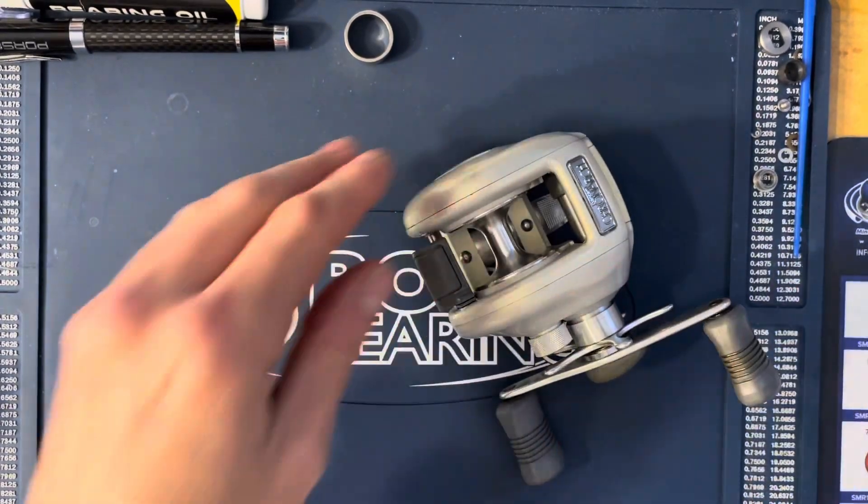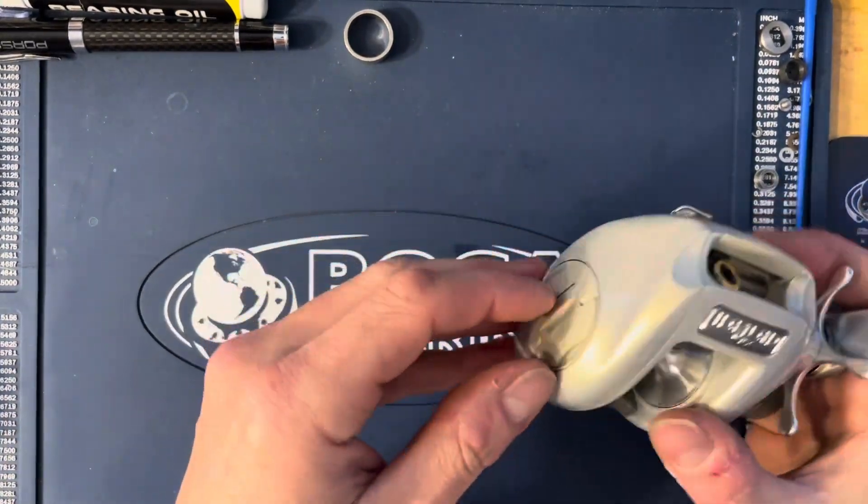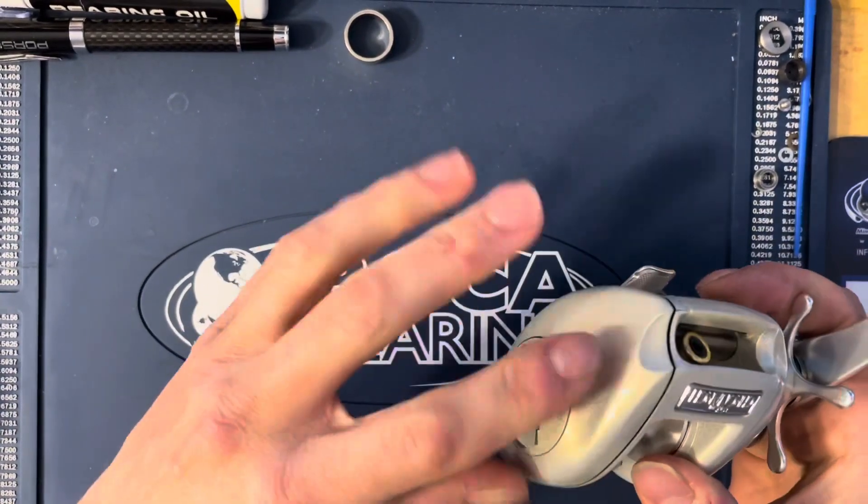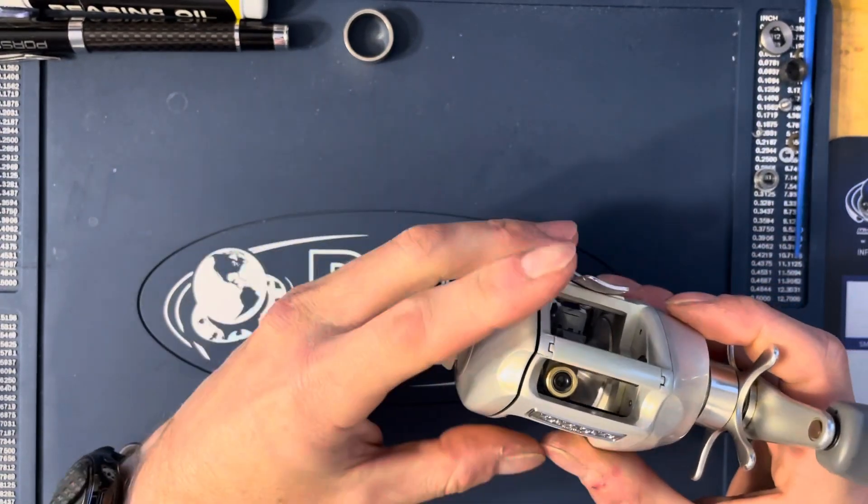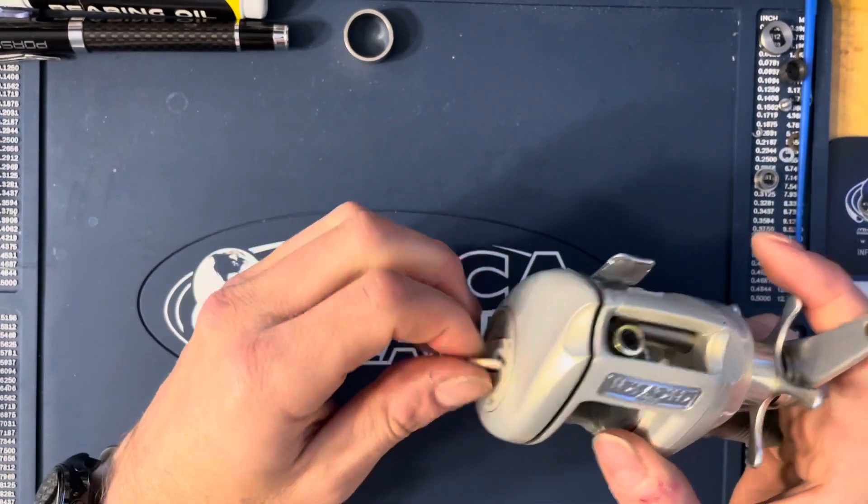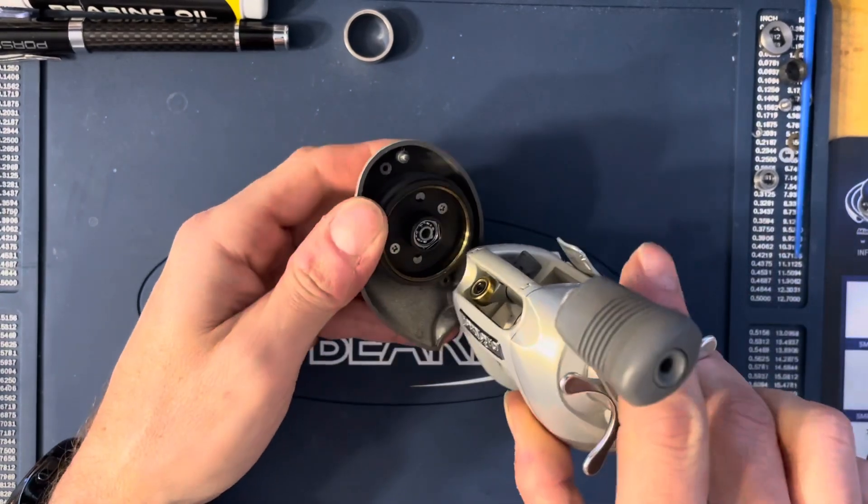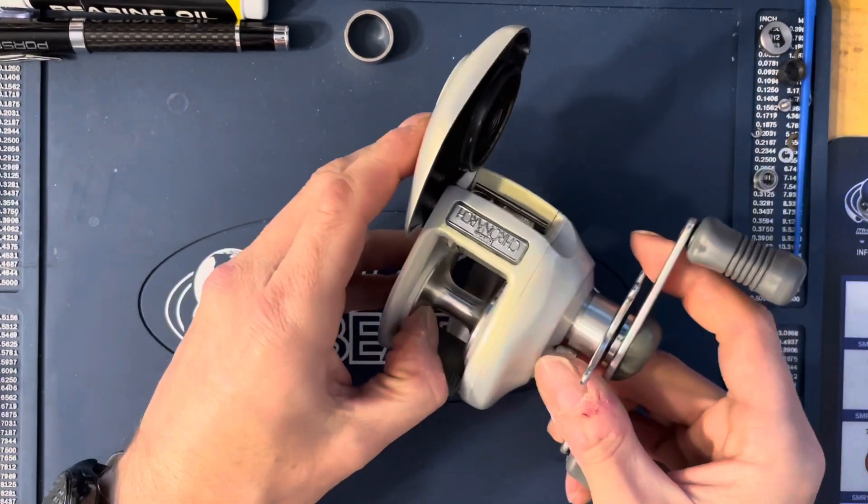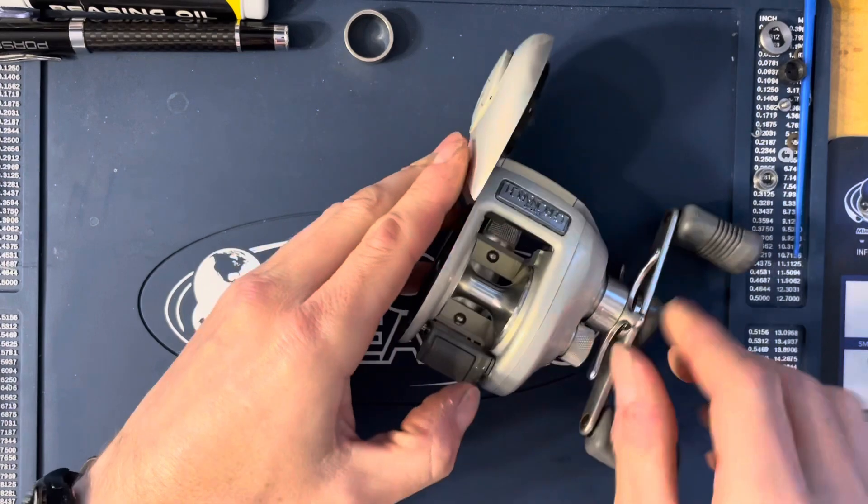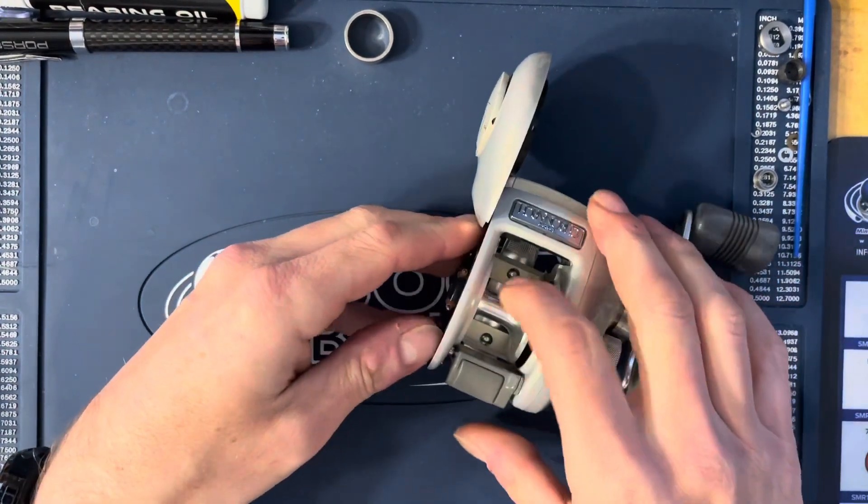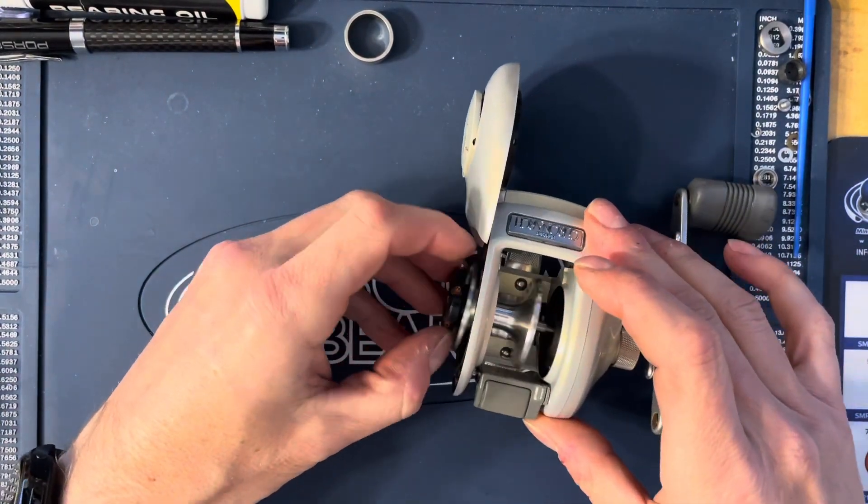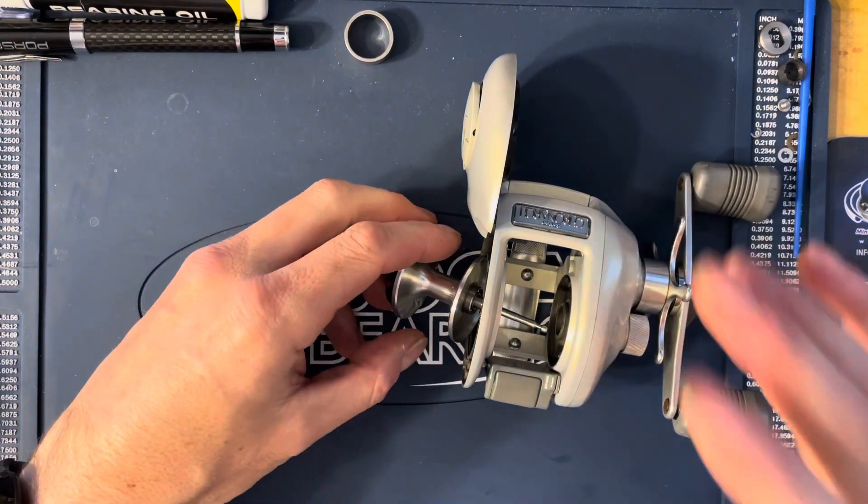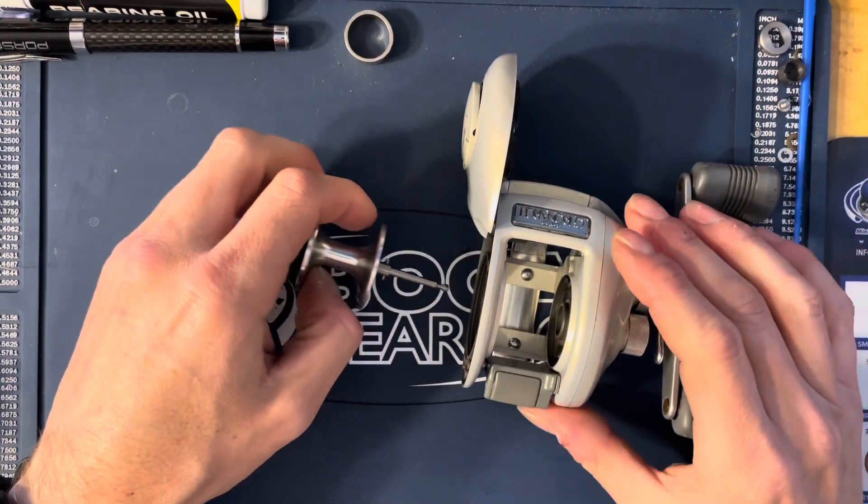It is one of the best reels they ever made. I did a full cleaning, polish, spool bearing upgrade with Bocabearing Orange Seal ABEC 7s. It just needed a little bit of revamp, a little bit of freshen up since it's been sitting for so long. The grease and everything was non-existent, it was pretty dry, it was pretty crusty.